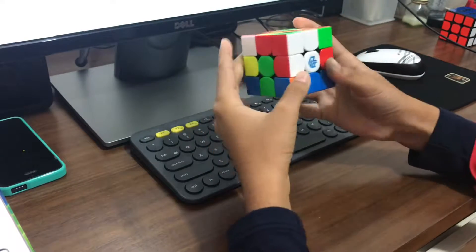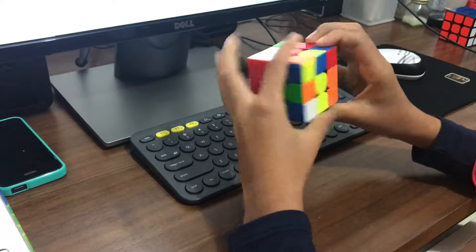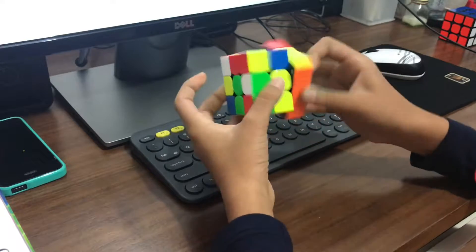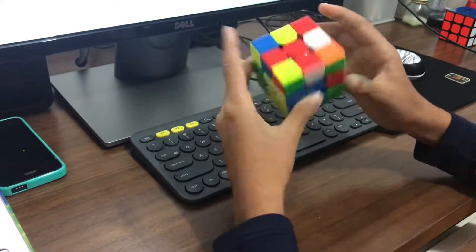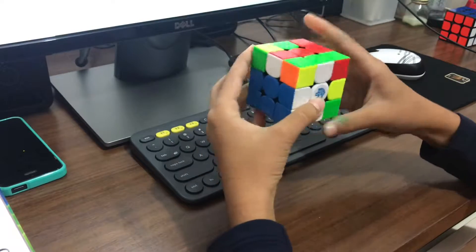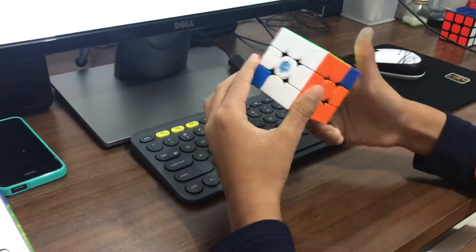So Yuxing Du got a Sune double PLL skip which is just crazy luck. So now that he's got the world record, one interesting thing about it is he normally averages about 9-10 seconds. So since when did he get this new 3.47 solve? It was just crazy.